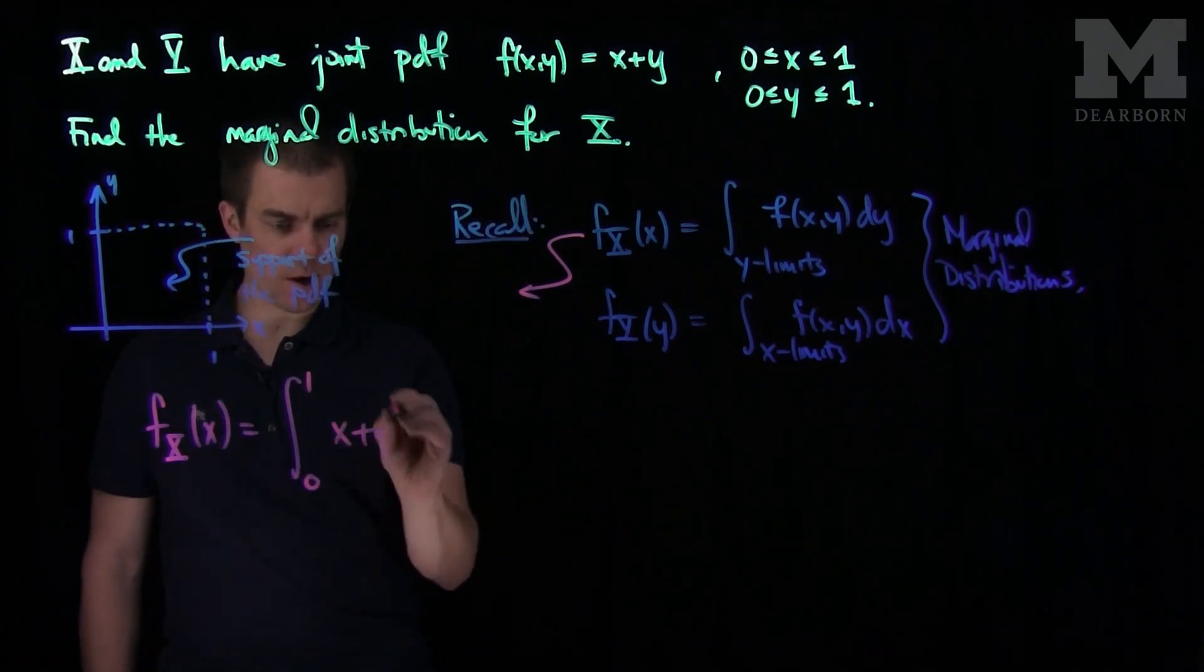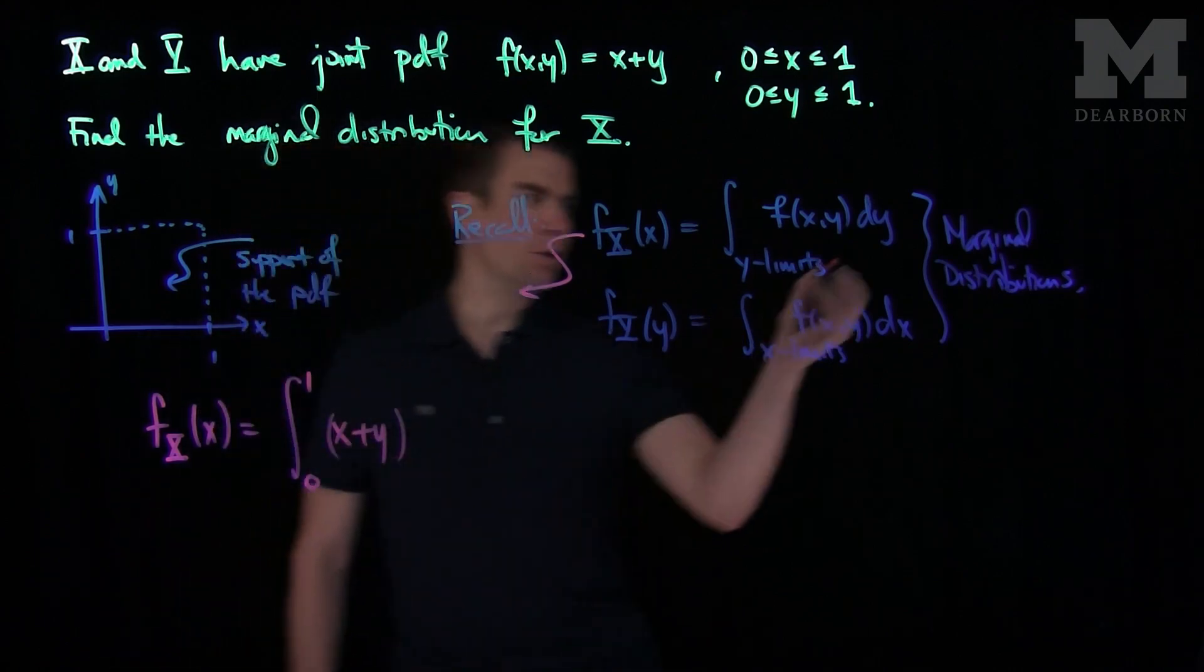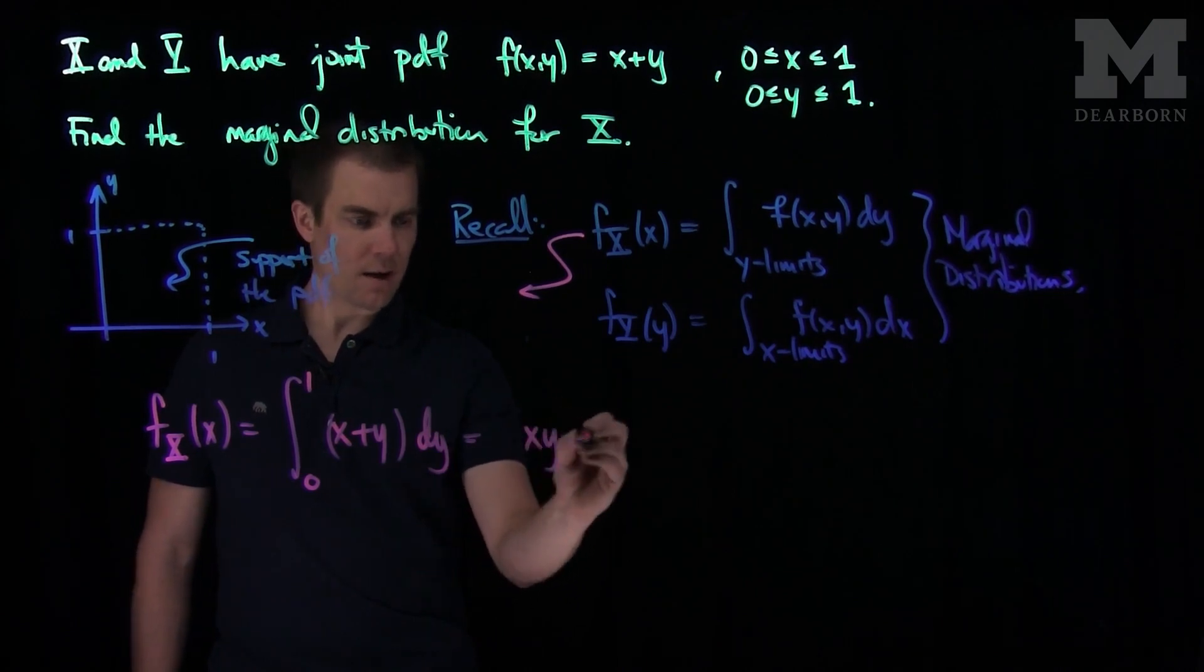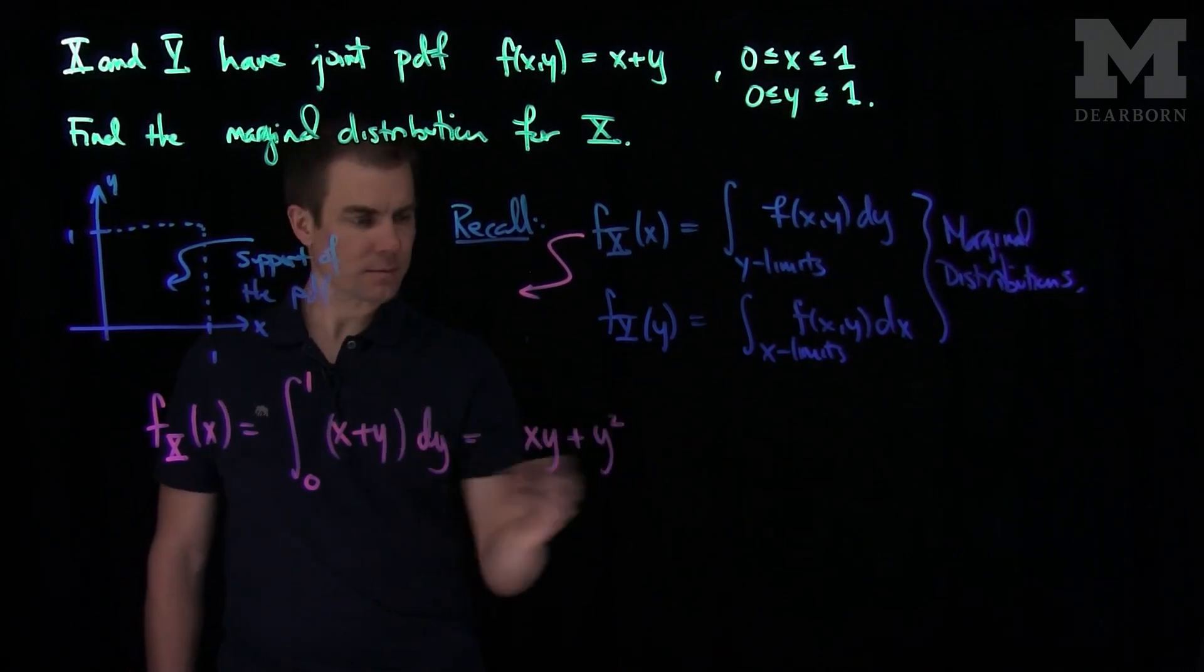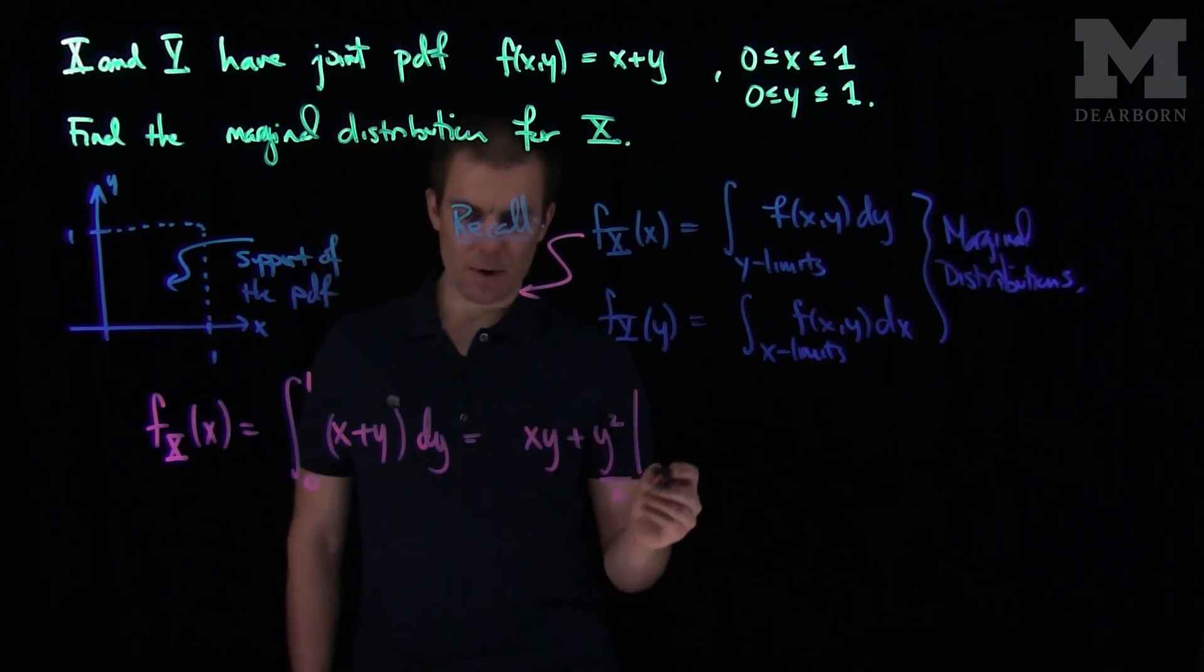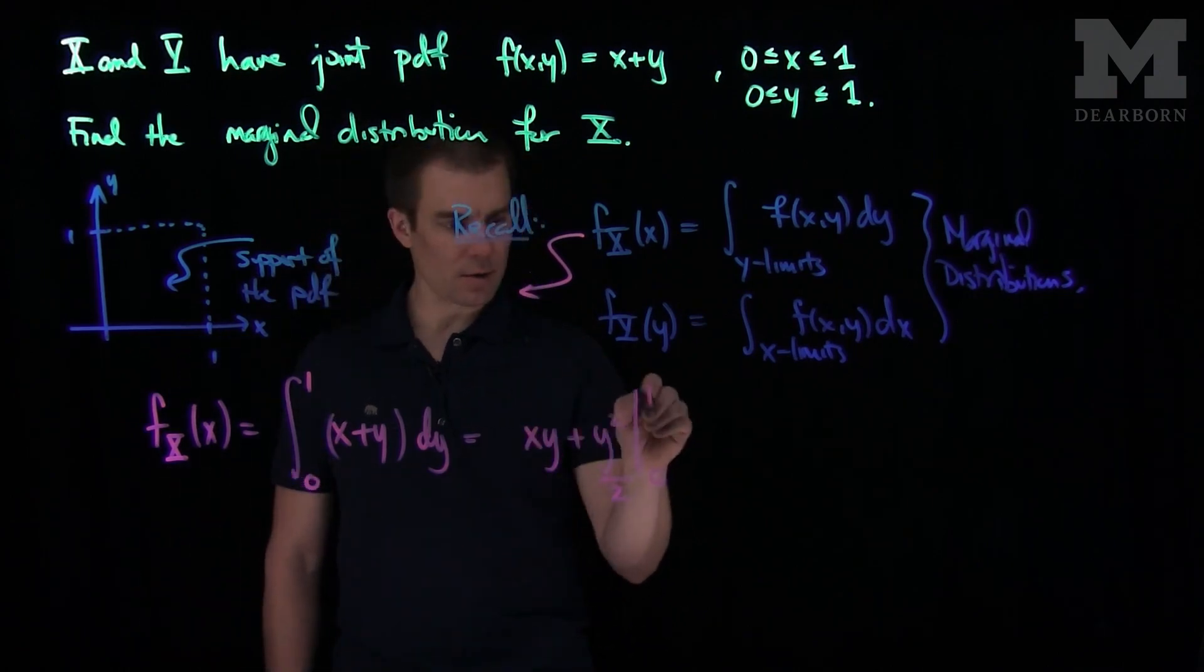Since we are doing an x marginal, we do a y integration, dy. We will get xy plus y squared, evaluated from - and y squared over 2 of course - evaluated from 0 to 1.